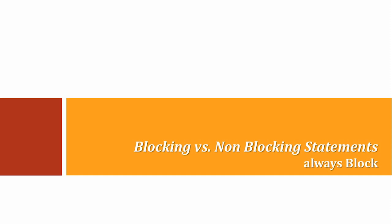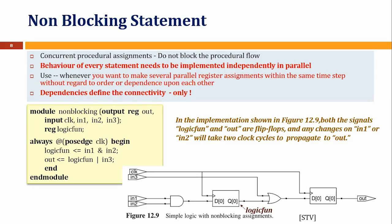This is an example where we have used non-blocking statements. The module is called 'non-blocking' and the output is declared as 'out'. There are different inputs like clock, in1, in2, and in3. A register is declared with the name 'logic_fun'. On the positive edge of clock, in1 and in2 are ANDed and assigned to logic_fun, and then logic_fun ANDed with in3 gives the result 'out'.